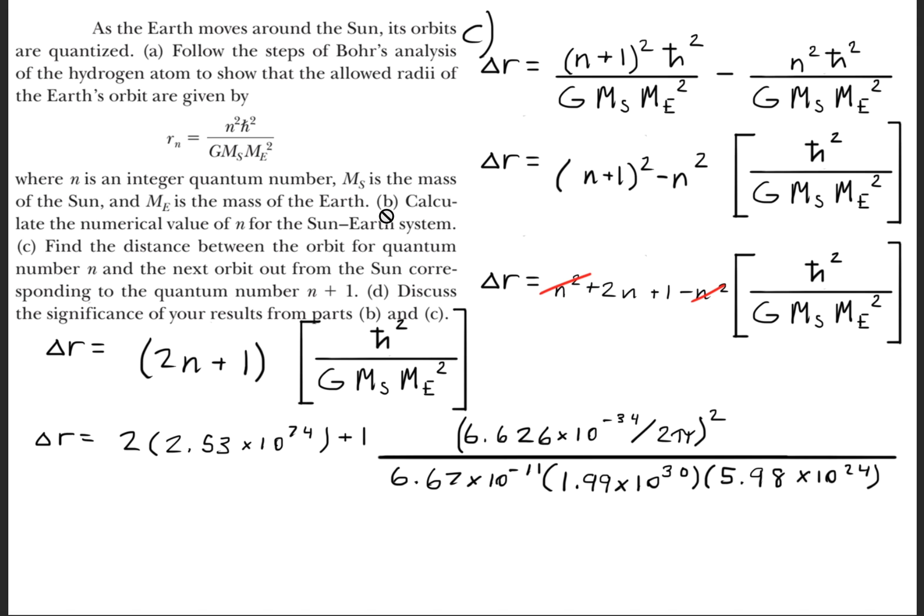Recall that we found the value of n when we were doing Part B. Just as a reminder, it was 2.53 times 10^74.